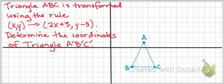So our first step is to come up with the coordinates of our original triangle here in blue, the vertices A, B, and C.